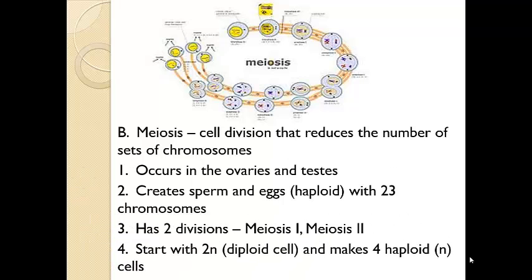In meiosis we're going to start out with a diploid cell. So it is a process to reduce the number of chromosomes. So at the beginning we start with our normal amount, a diploid cell, 2N, which means we have two sets. So we have 46 chromosomes. And we are going to end meiosis with four cells, and each one is haploid. So each one only is going to have the 23 chromosomes that we need for our sperm and egg cells.